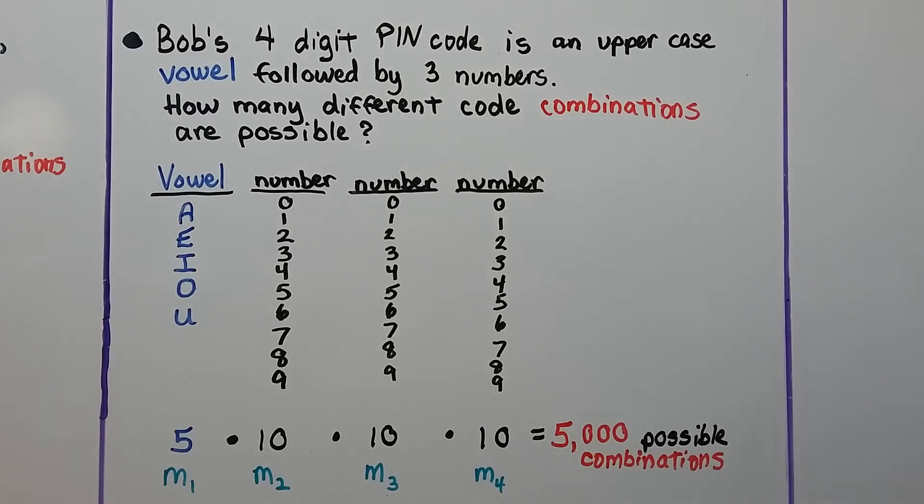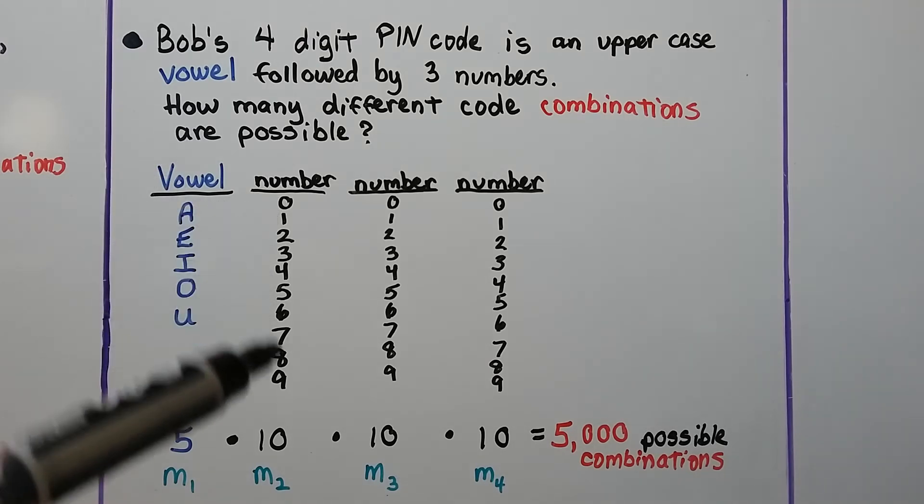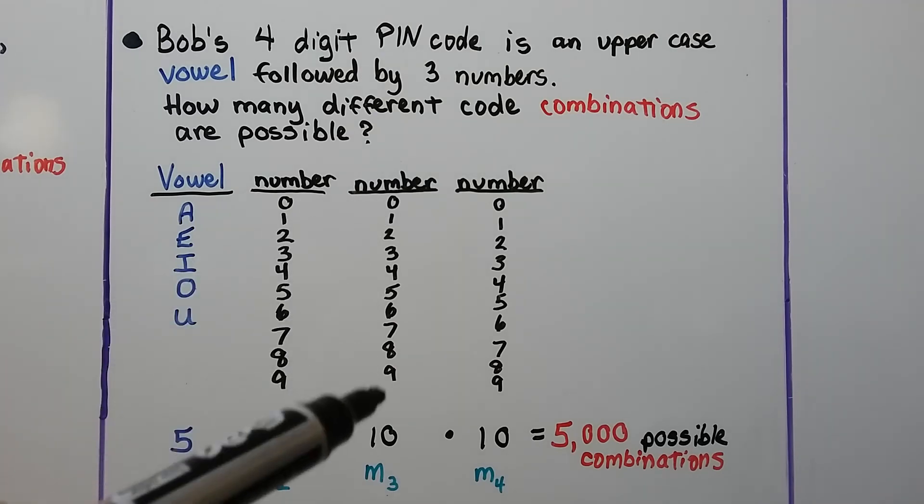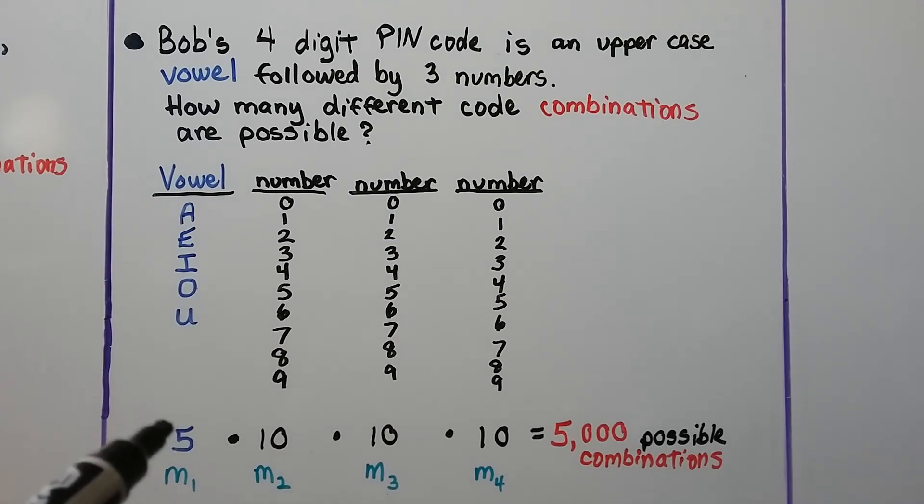Bob's four-digit PIN code is an uppercase vowel followed by three numbers. How many different code combinations are possible? So we have five capital letter vowels. We have numbers from 0 to 9. There's five vowels, ten numbers from 0 to 9, and again, and again. We multiply the 5 times the 10 times the 10 times the 10 as the m sub 1, sub 2, sub 3, and sub 4. And we find there's 5,000 possible combinations for his PIN code.